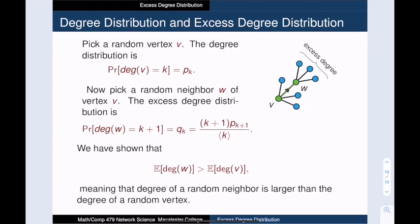To summarize, if we pick a random vertex v, then we get a sample from the degree distribution of the graph. If we then pick a random neighbor w of that random vertex v, then we get a sample from the excess degree distribution of the graph. This excess degree distribution is biased towards higher degree vertices because these vertices are at the ends of more edges.